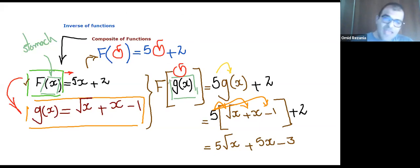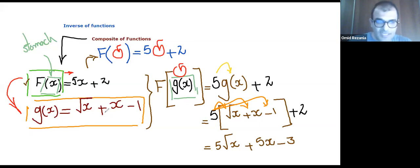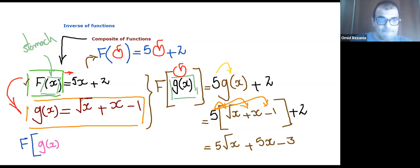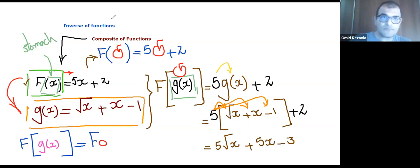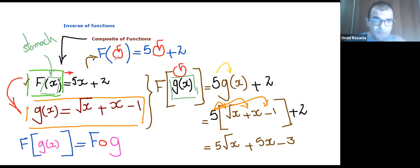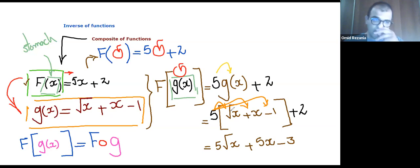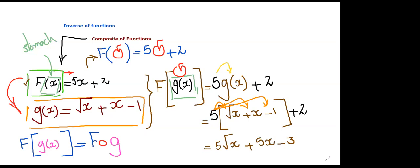Now, to show that f has swallowed g, there is an interesting mathematical notation. Instead of showing that f has swallowed g(x), I can write it as f composed with g — written as f small-o g. This means that this is a composite function, which means a function of a function — the function swallows another function. Any questions so far? No. Everyone is fine? Yes, it's fine. Awesome.